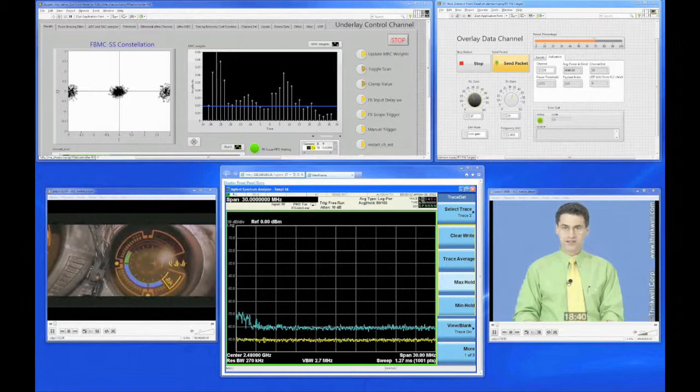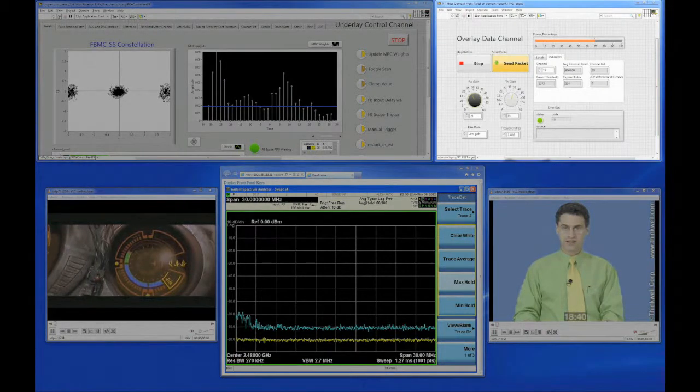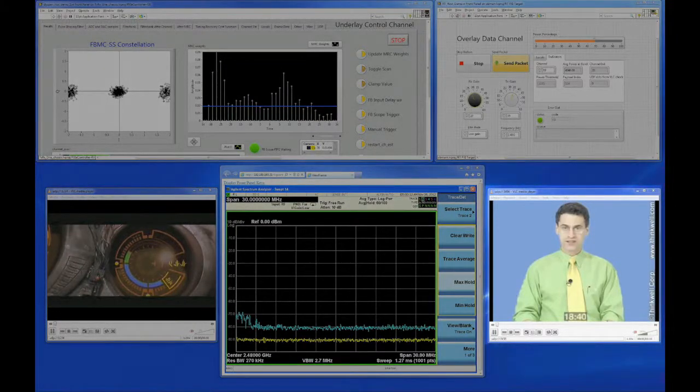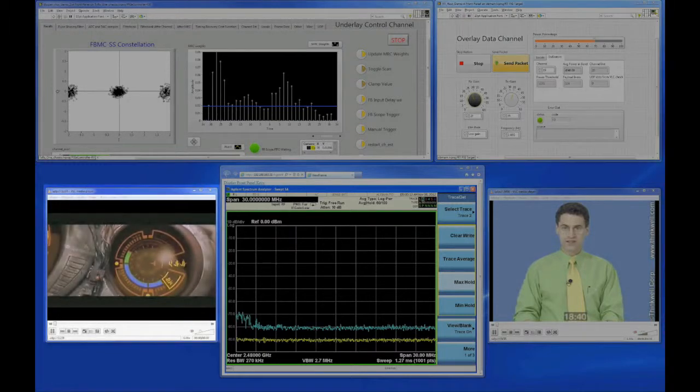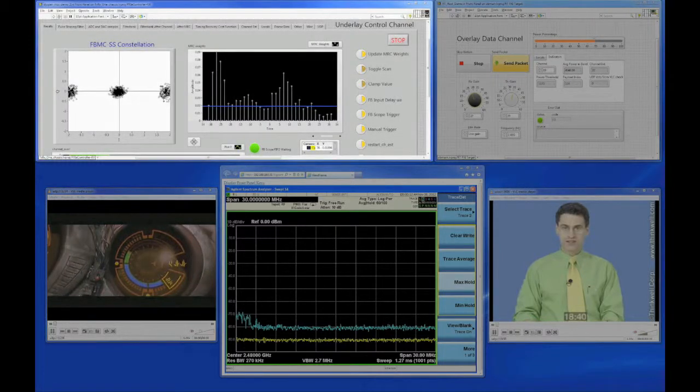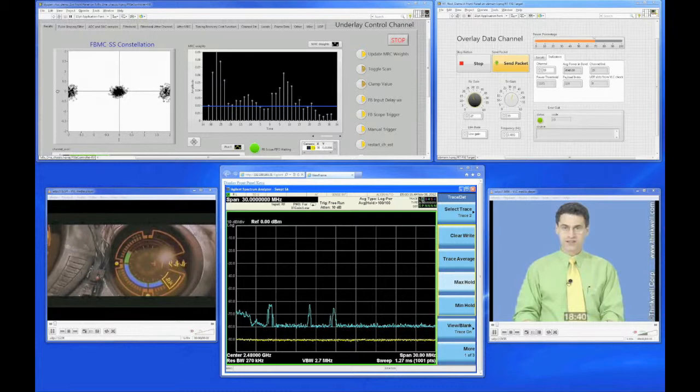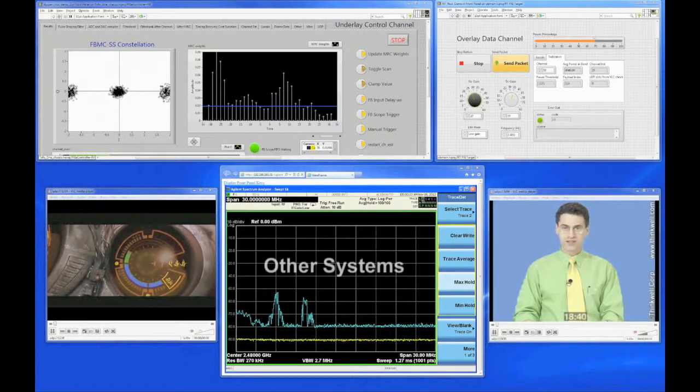Now we describe our video demonstration. The software front panel of the overlay channel is shown in the upper right-hand corner of the screen. This system is streaming video and audio via UDP. The video stream is displayed in the lower right-hand corner of the screen. The underlay control channel is also streaming a video, which is shown in the lower left-hand corner of the screen, while its software front panel is in the upper left-hand corner of the screen. The spectrum analyzer is occupying the bottom center of the screen and represents the spectrum seen by the overlay control channel's receiver. We leave the spectrum showing so that the viewer can see the activity in the spectrum as the overlay control channel changes frequencies and updates are made. We operate over a 25 MHz bandwidth centered at 2.48 GHz.